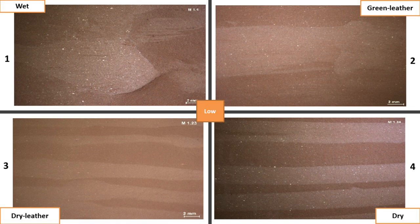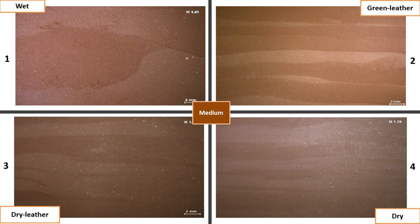With a medium labour investment, the grooves are pronounced during wet and green leather consistency. However, when the clay is dry, the trace is flat with a homogeneous shine over the surface. The surface treatment obtained in the wet and green leather phases is the smooth surface, but in dry leather and dry consistency, it is considered a polished surface.